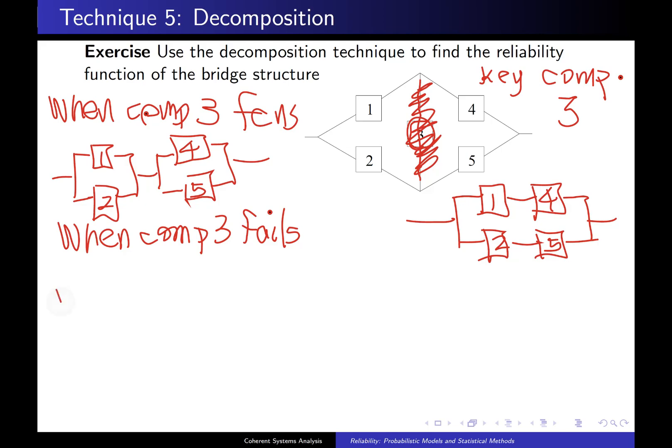Finally, to use the decomposition technique, we say that R of P is equal to the reliability function for our first system that we wrote down there, and that will be [1 - (1 - p_1)(1 - p_2)], and that is the reliability of that parallel system, but it is in series with the parallel system consisting of 4 and 5.